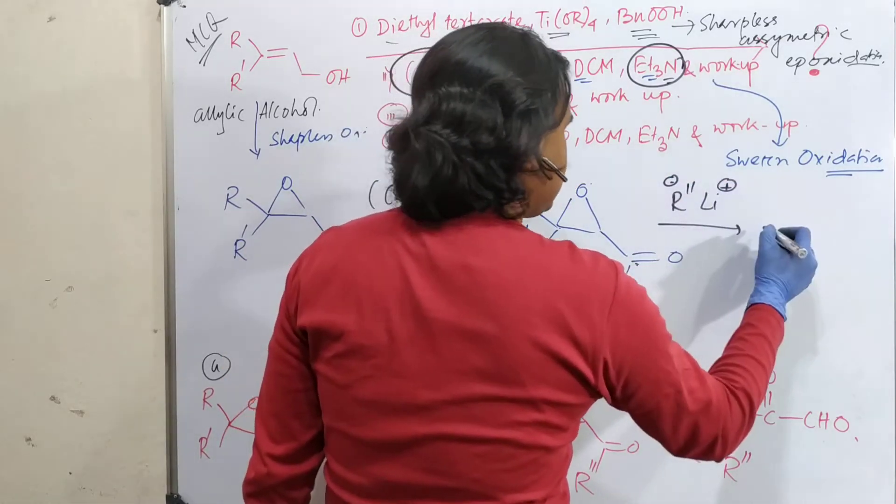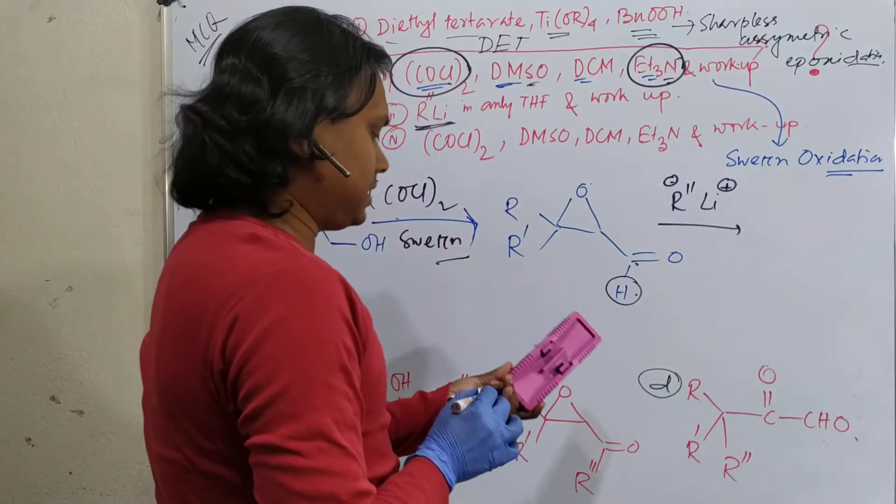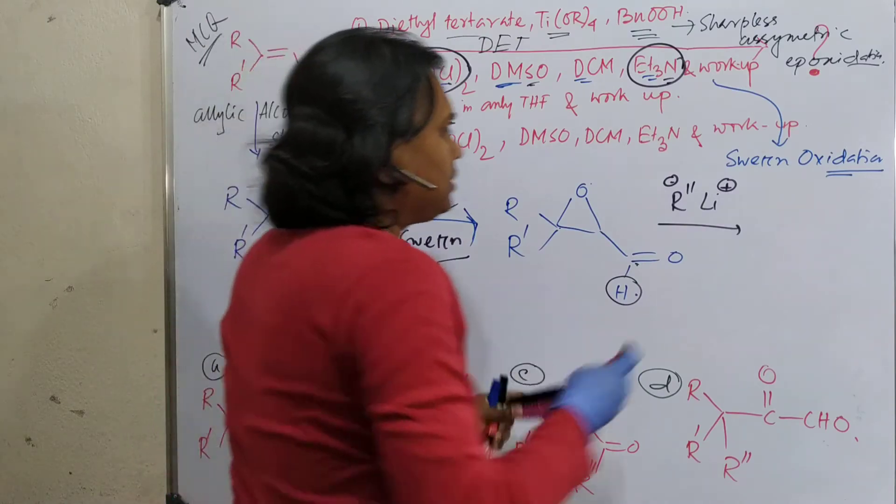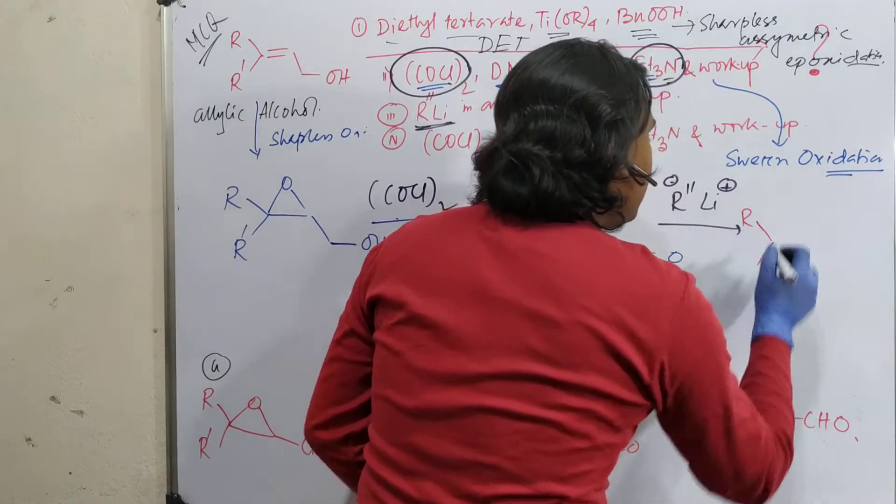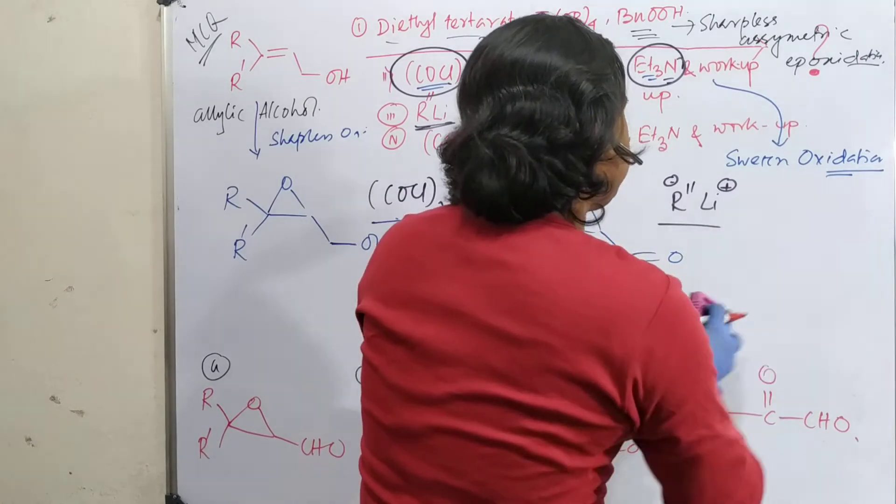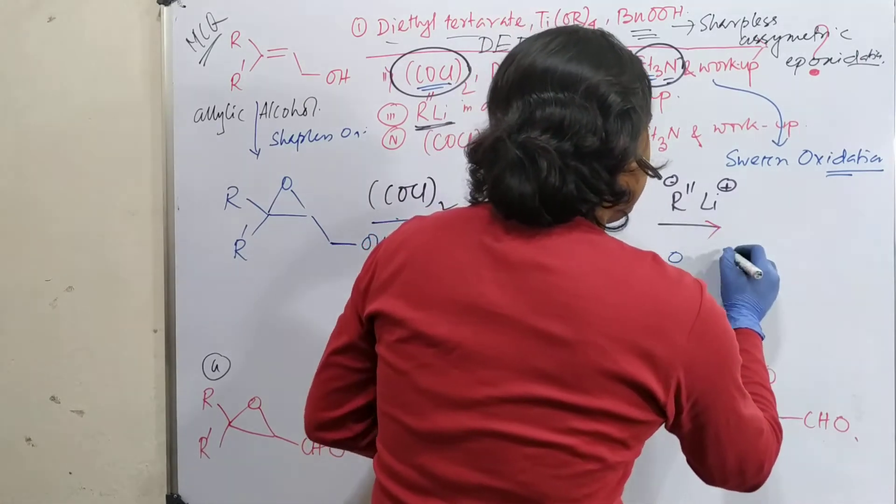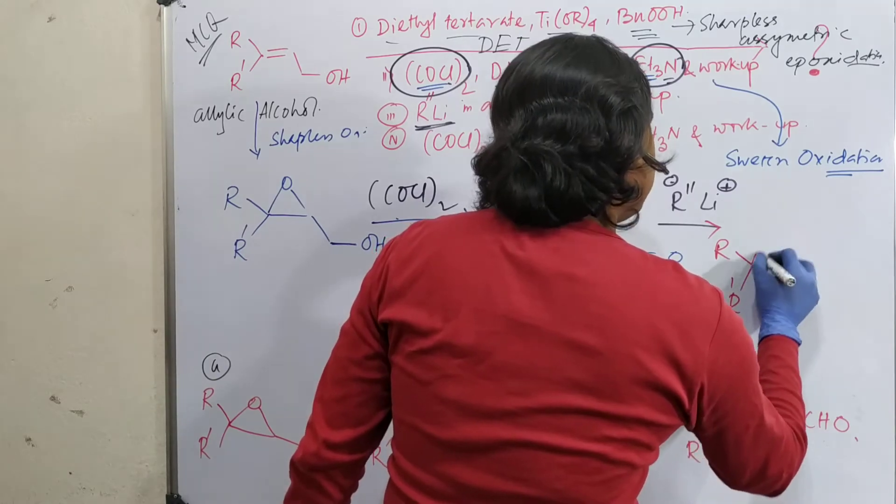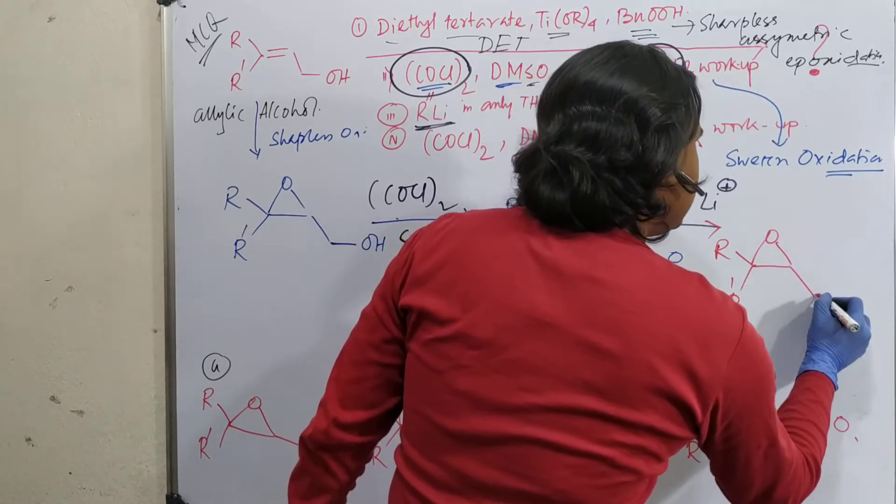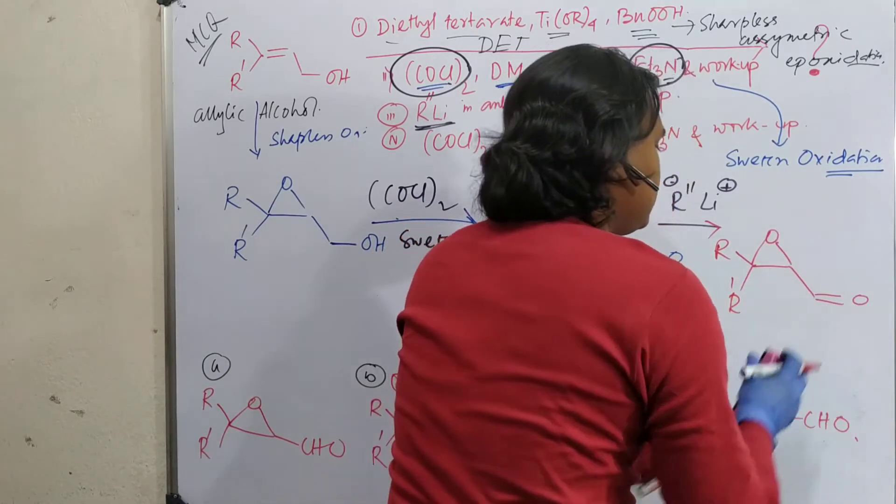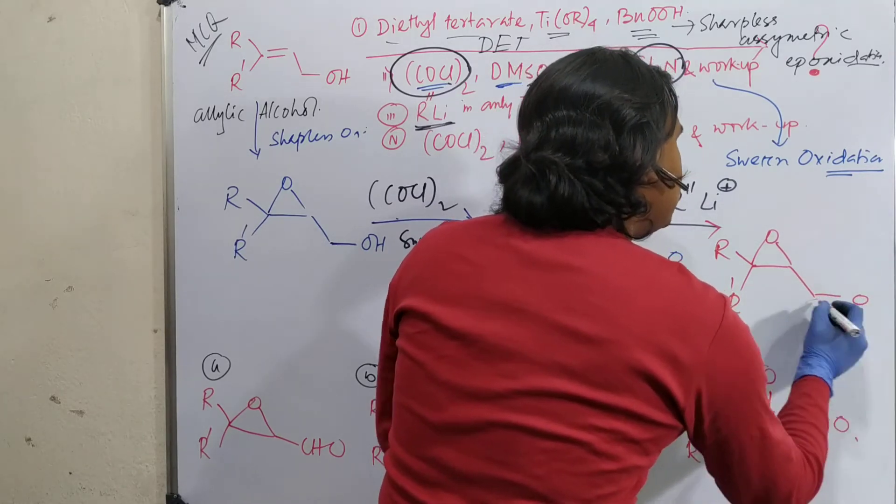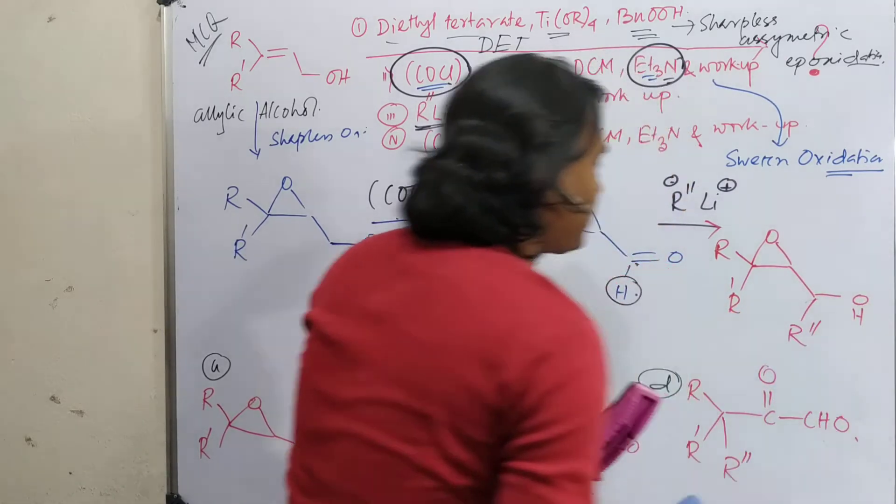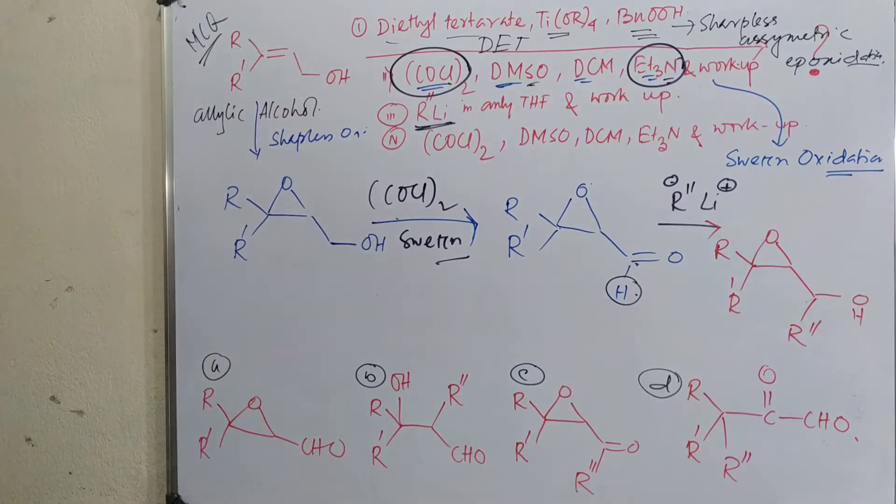So this is minus, this is plus. So what will it result? It will result this, let me save some space. This is R, this is R prime, this is epoxide, this is a secondary alcohol after workup. And this is R double prime. Is it visible? Yes, it is visible.